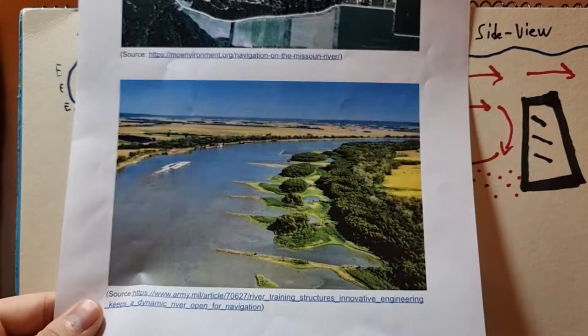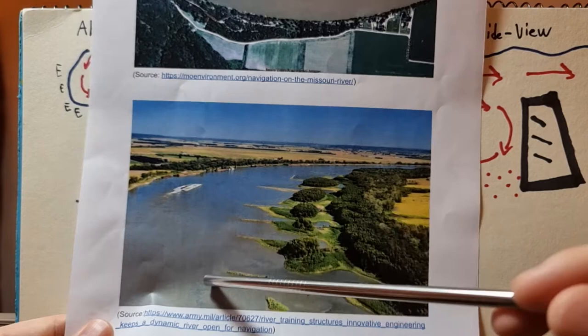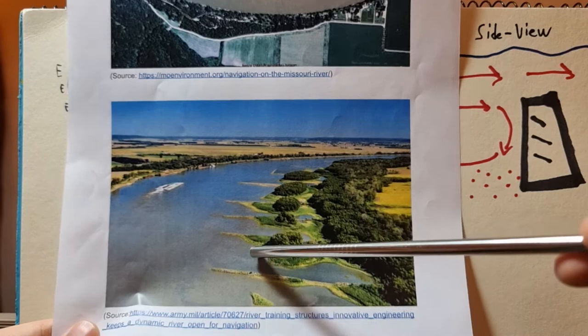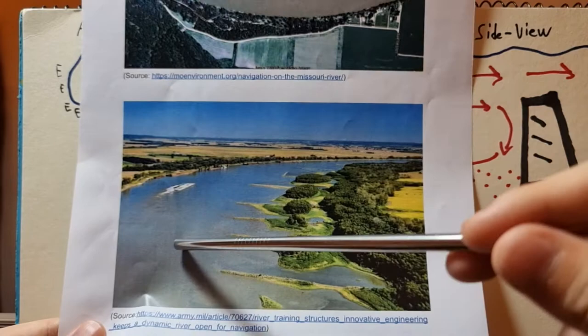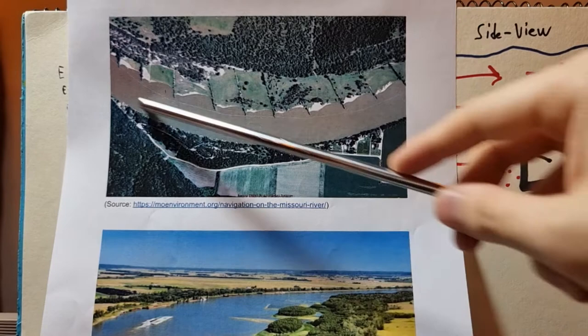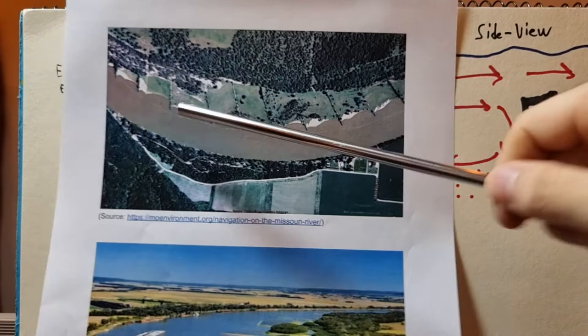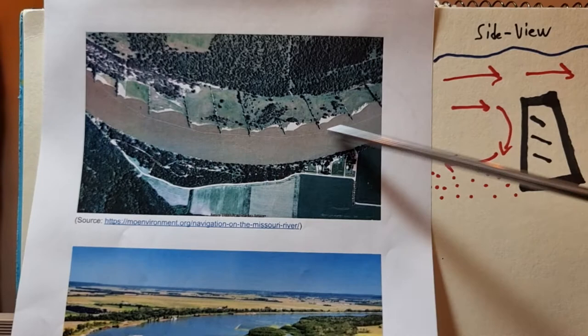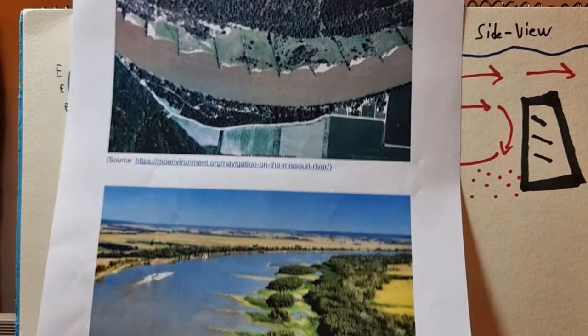Even larger ships can use it for water carriage. This is also another river in the US called the Mississippi River, and winged dikes are on one side where all the sedimentation occurs. Because of that fast-moving main channel, vessels can move around. These channels have been successful in keeping their shape all year round, as the fast water flow transports all materials out of its way.